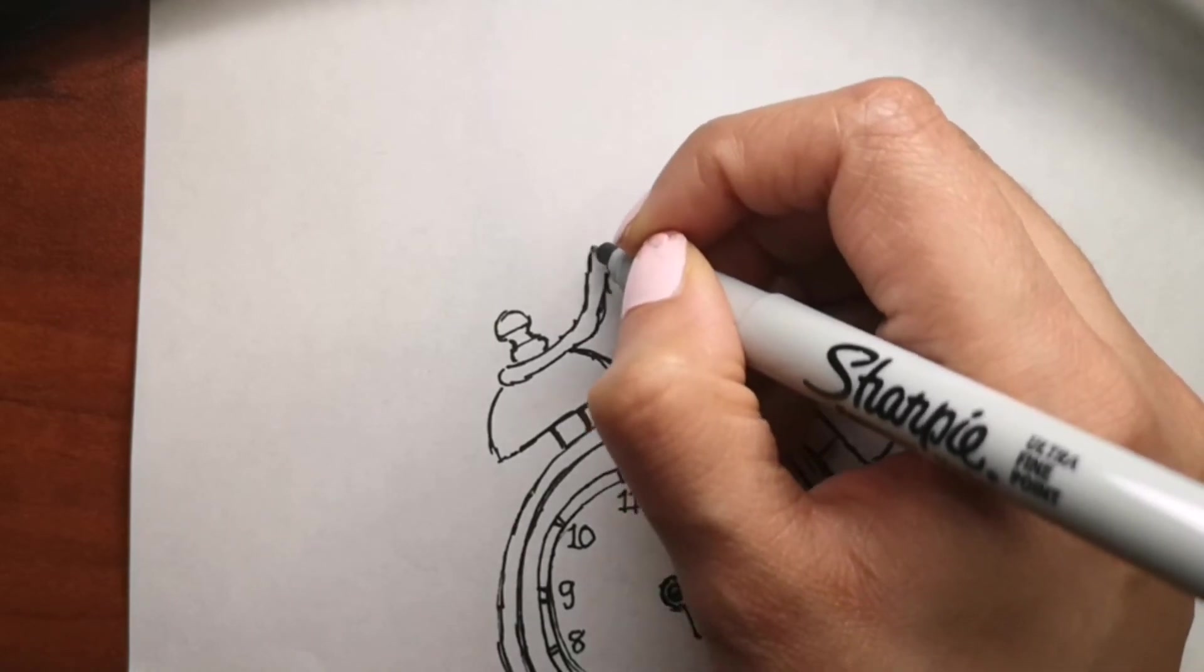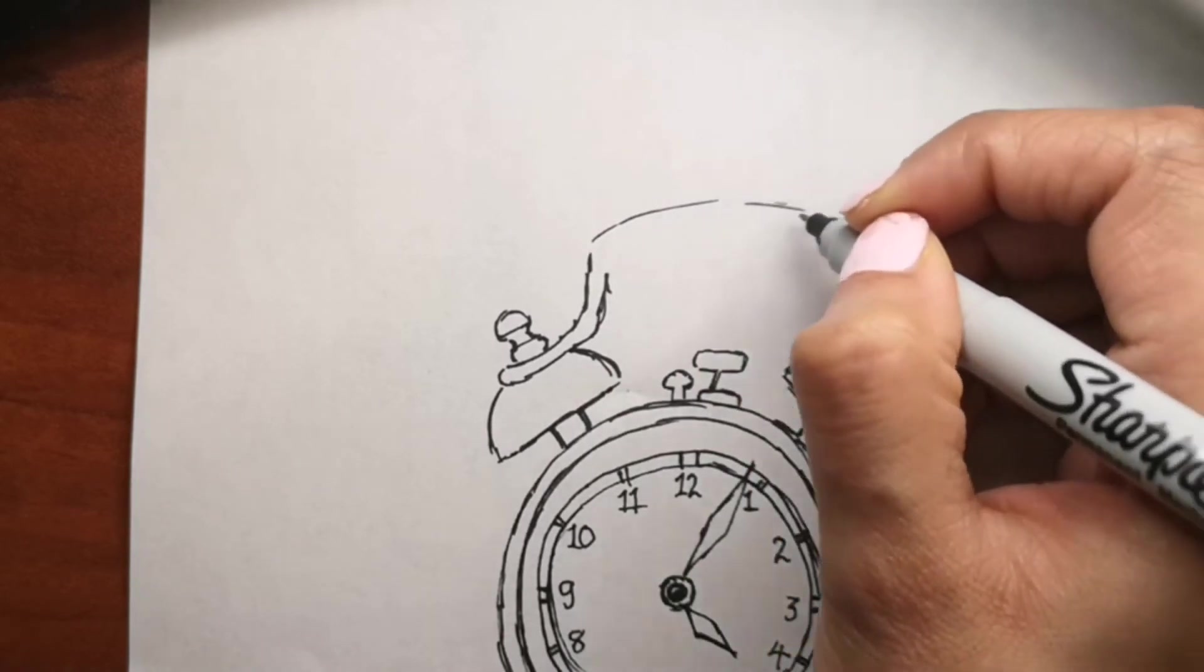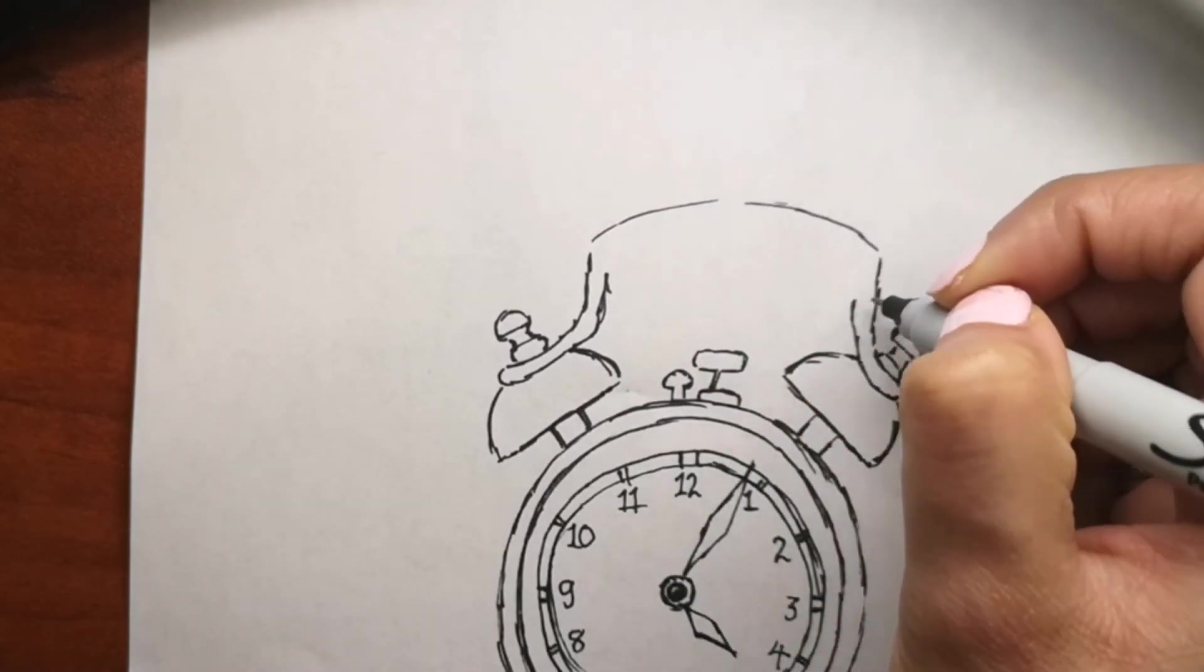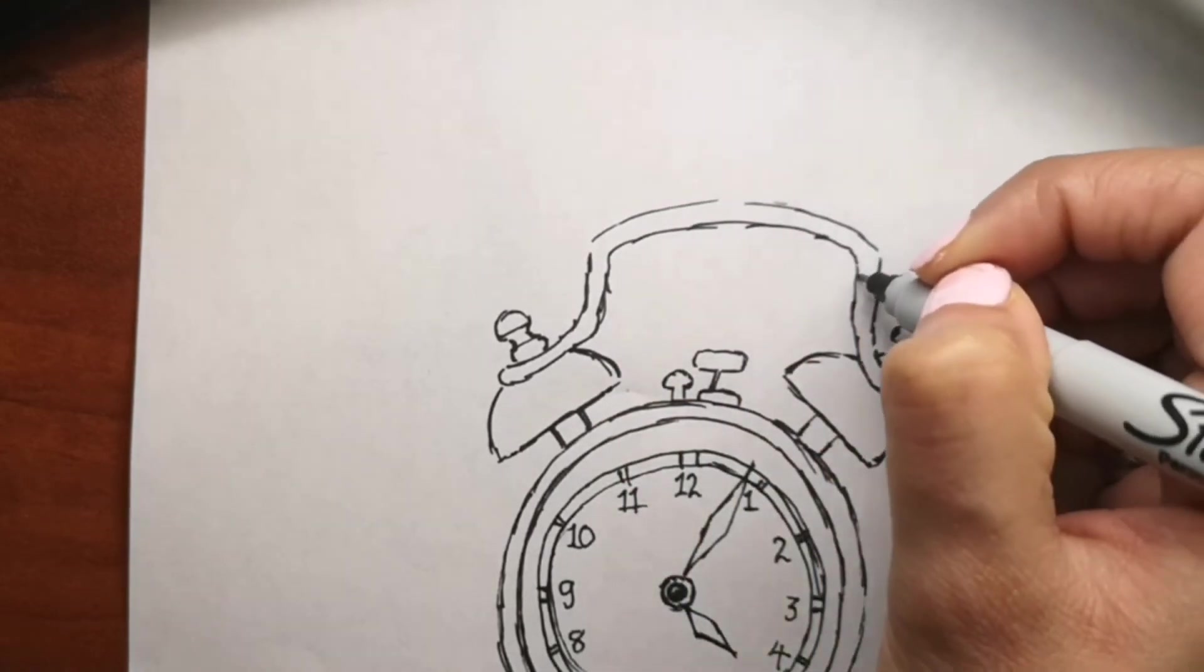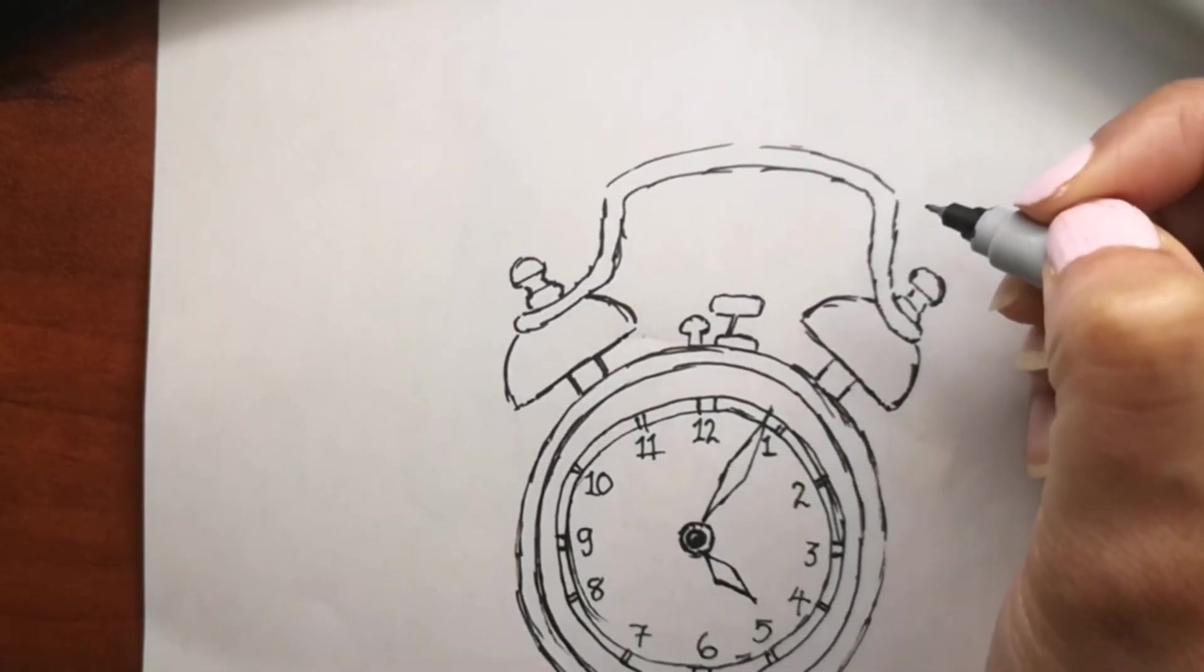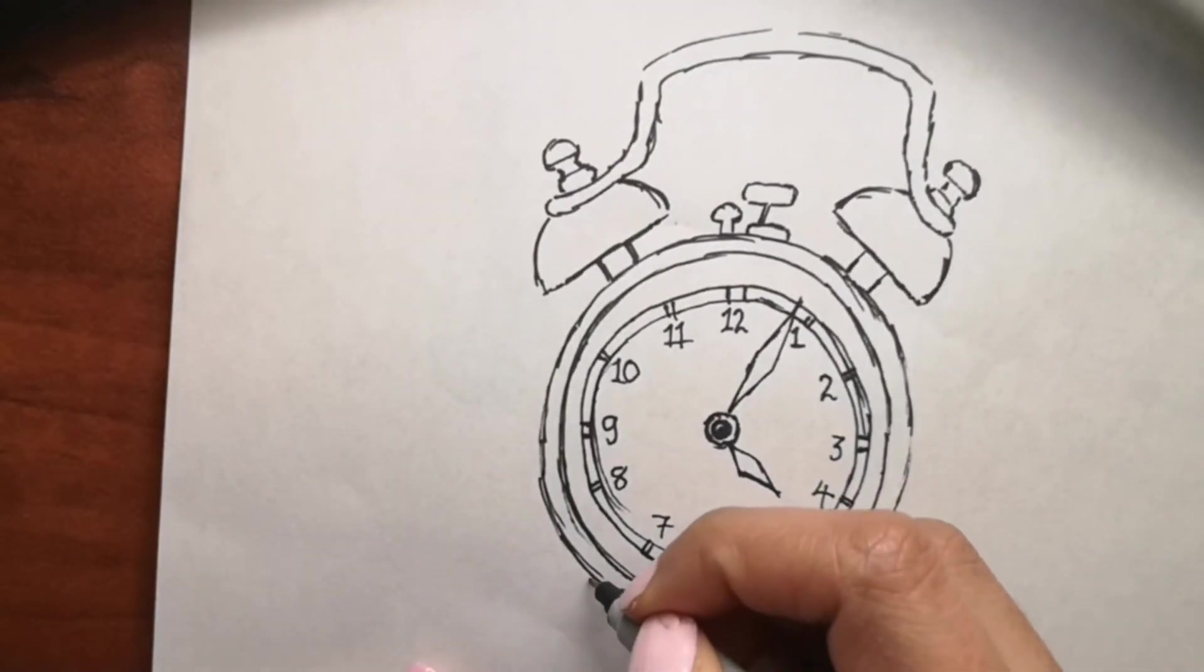A clock is a contraction of stroke of the clock and comes from 15th century references to medieval mechanical clocks. So a clock is a contraction of stroke of the clock.